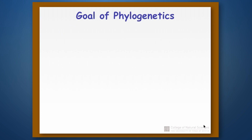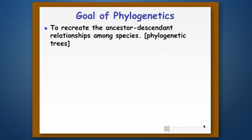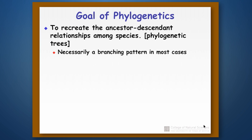The goal of phylogenetics is to recreate the ancestor-descendant relationships among species — our goal is to build phylogenetic trees. This is necessarily going to be a branching pattern, which should make sense based on our discussion of speciation, because usually an original parental species divides into two or more additional species. We've also talked about reticulate evolution and hybrid speciation, but we're going to be ignoring that for this part of the class.